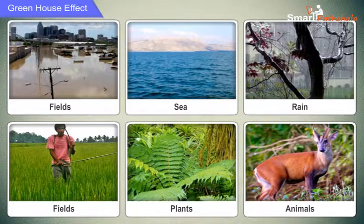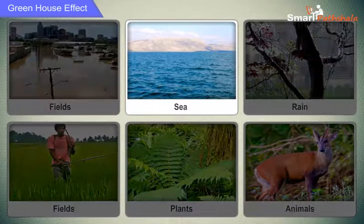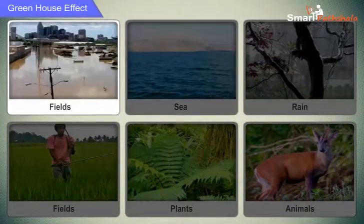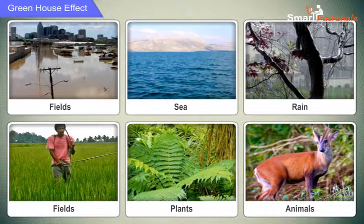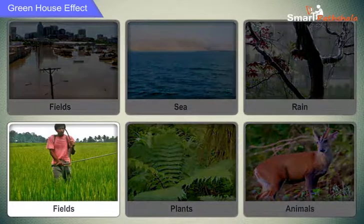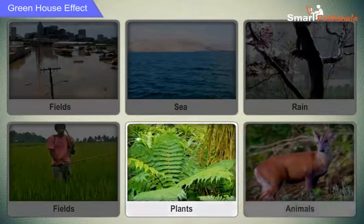Now let us understand the various consequences of global warming. Global warming causes rise in sea levels which results in floods. In many places, coastal areas have already been flooded. Global warming could result in wide-ranging effects on rainfall patterns, agriculture, forests, plants and animals.